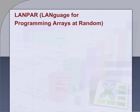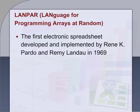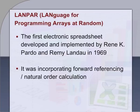First, LANPAR — Language for Programming Arrays at Random — was the first electronic spreadsheet, developed and implemented by Rain K. Peridoux and Remy Landew in 1969. LANPAR was used by Bell Canada, AT&T, General Motors, and 18 operating telcos nationwide for their local and national budgeting operations. Its uniqueness was incorporating forward referencing or natural order calculation.